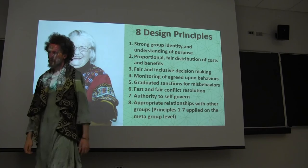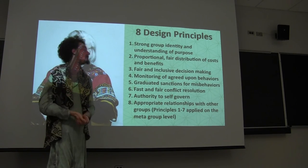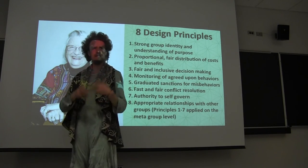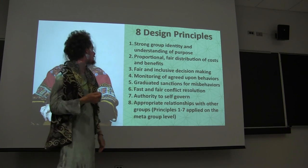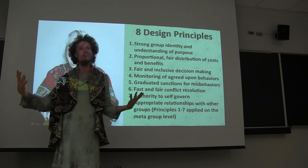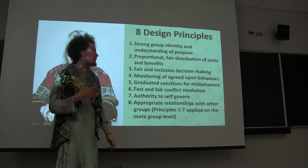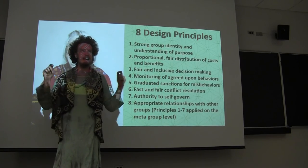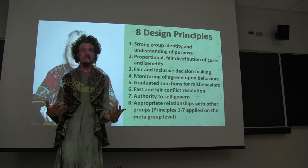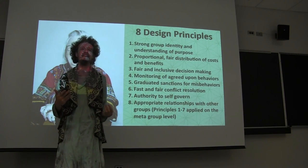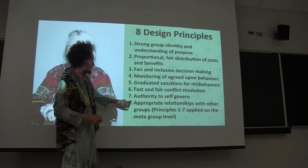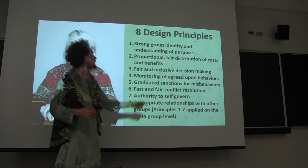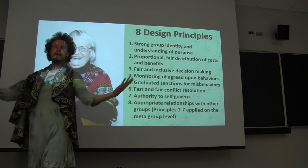Three: fair and inclusive decision making — making sure that everybody in the community is part of the decision-making practice. The key word here is consensus in the collective housing world. Four: monitoring of agreed-upon behaviors — in small situations like a collective house, that just sort of happens implicitly. Five: graduated sanctions for misbehavior, some way of enforcing these laws. Six: fast and fair conflict resolution, which ties back to the consensus decision making. In consensus-based decision making, everybody has to wholeheartedly be behind whatever decision is being made — it's a lot harder to achieve consensus than it is to achieve a majority. Numbers seven and eight have to do with group-level dynamics: the authority to self-govern, and appropriate relationships with other groups.